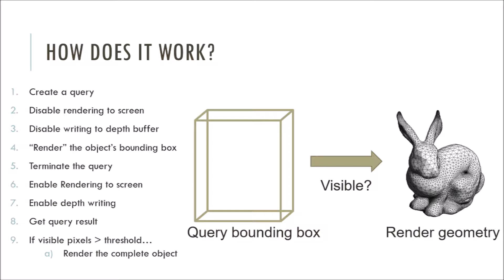Next, we reset the writing to the frame and depth buffer so the object can be rendered to the screen. Then we'll ask for the result of the query, that is, the number of visible pixels of the bounding box. Finally, we decide if we render the object. If the number of pixels drawn is greater than some threshold, typically zero, we render the complex object. Otherwise, we don't because that object is being occluded.